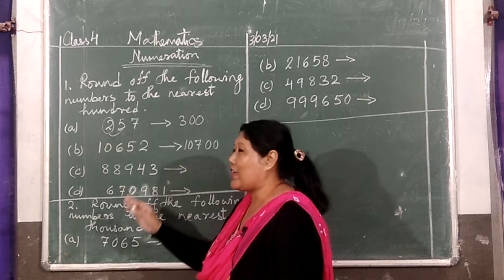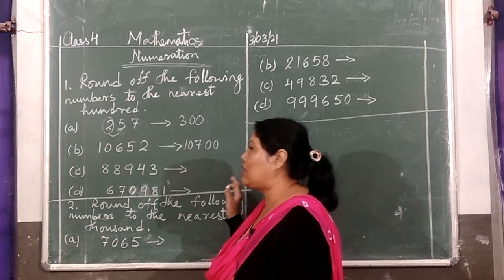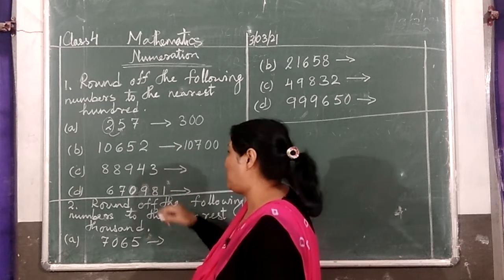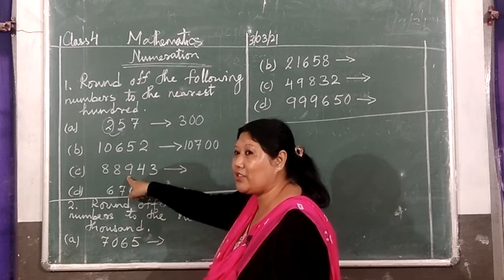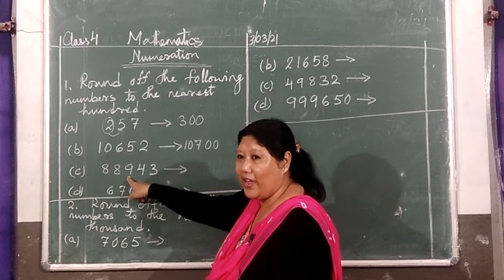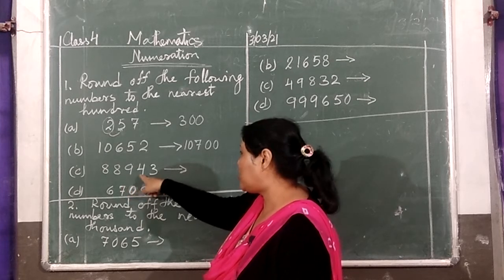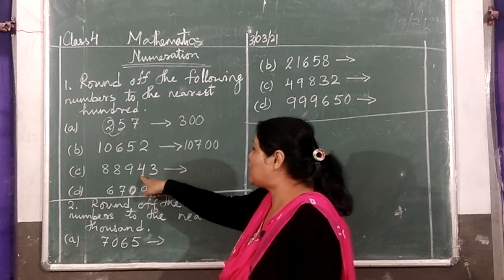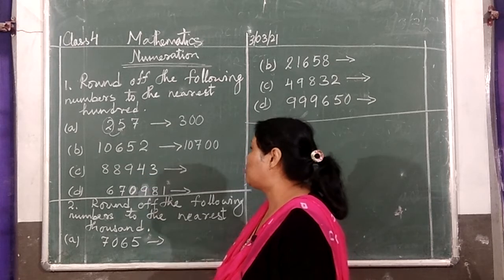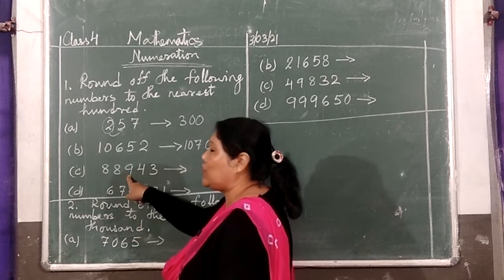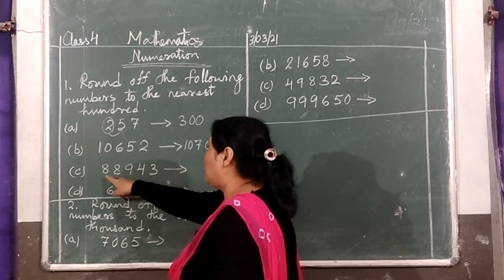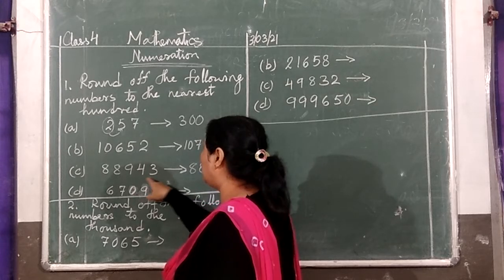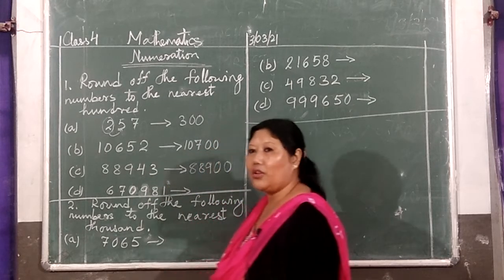Next is 88,943. Big number — don't worry. You just look at the number in the 100s space, which is 9. Now, is 9 going to change? The next digit is 4, less than 5. So this 9 won't change — it will remain same. So 88,9 stays, and the remaining digits become 0: 88,900.